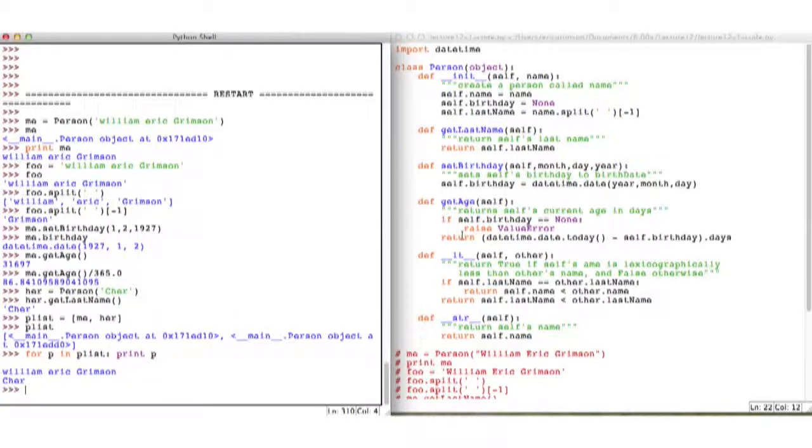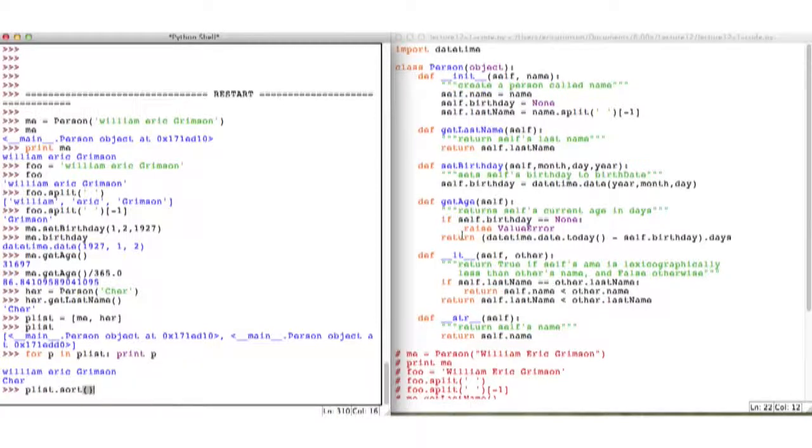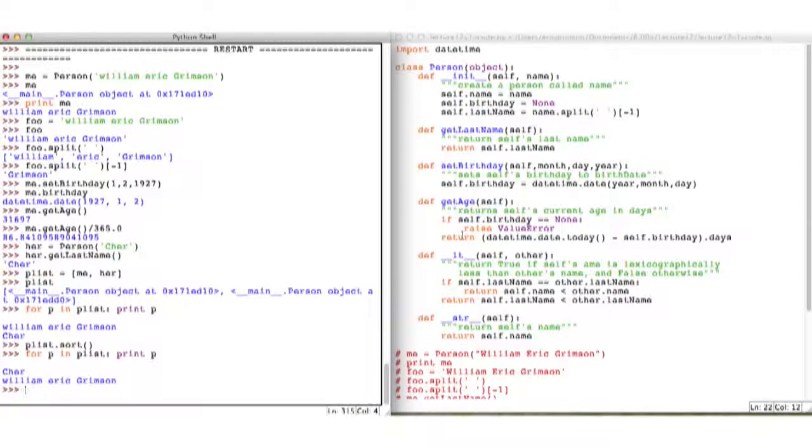But if I had a really long list, I'd like to have them actually sorted in order. So I'm going to say, for P list, I'm going to sort it. And it's now going to give me back something so that if I look at what I had previously, which is to print all the elements of P list, it's now in alphabetical order.